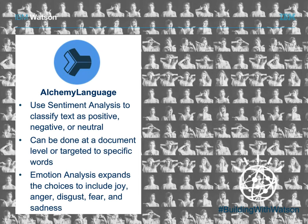Our model analyzes the words that a person uses in their text — single words and combinations of words. Based on the model we trained this emotion analysis API on, we correlate the words someone's using to an expressed emotion, one of those five emotions. The system was specifically trained on all types of conversational text: tweets, any type of social media text, blog posts, emails — anything that's more conversational as opposed to formal writing.